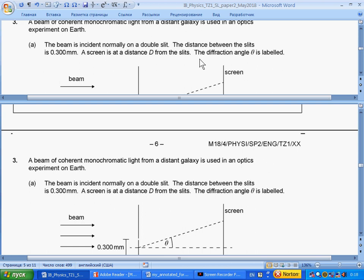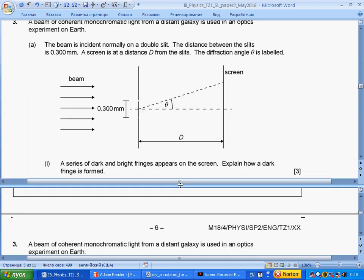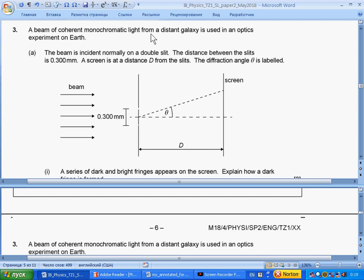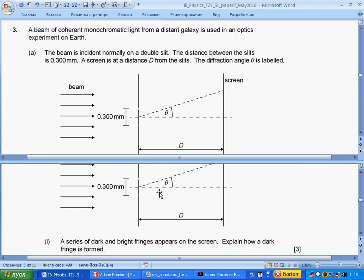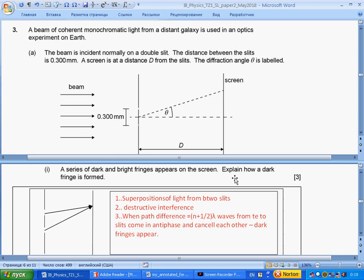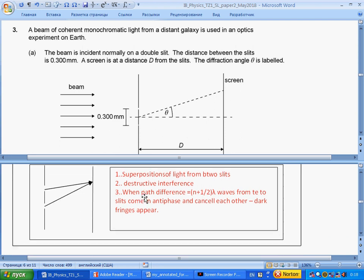Question 3. A beam of coherent monochromatic light from a distant galaxy is used in an optics experiment on Earth. The beam is incident normally on a double slit. The distance between two slits is given. The screen distance is given. The diffraction angle is labeled. A series of dark and bright fringes appear on the screen. Explain how dark fringes form. I decided to draw two slits and the screen. Show paths from slits to one point on the screen. The path difference, when it is n + ½ wavelengths, then the waves will come in antiphase. We have destructive interference, they cancel each other, and we have dark fringe appeared.